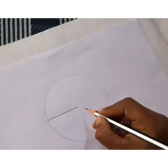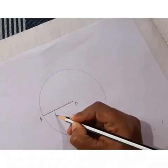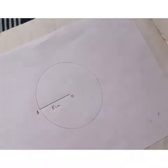Point A is the center. The radius from A is 5 centimeters in length.